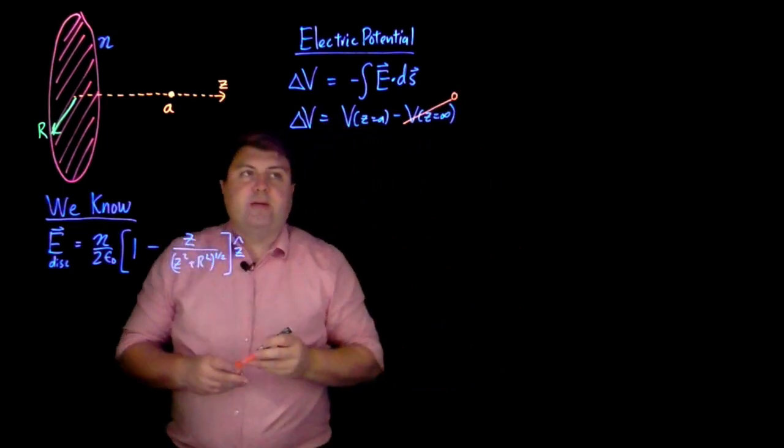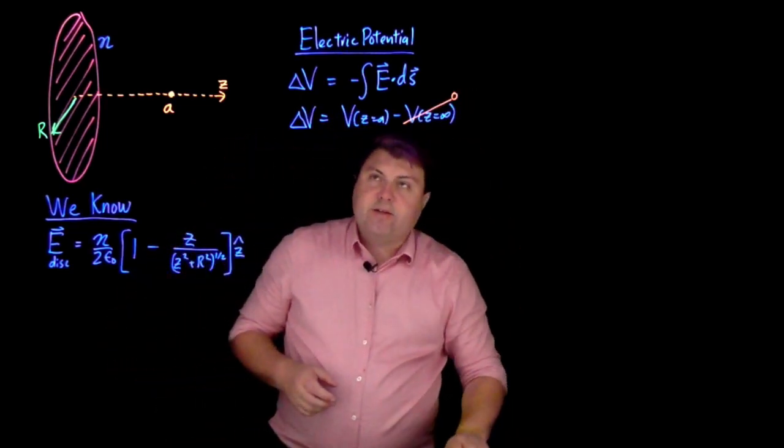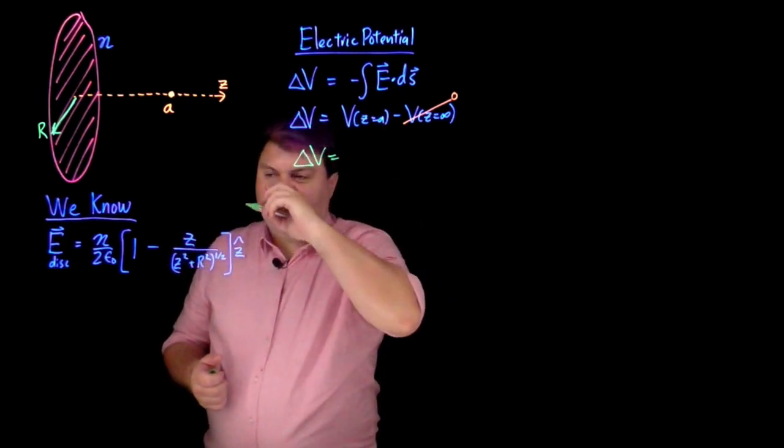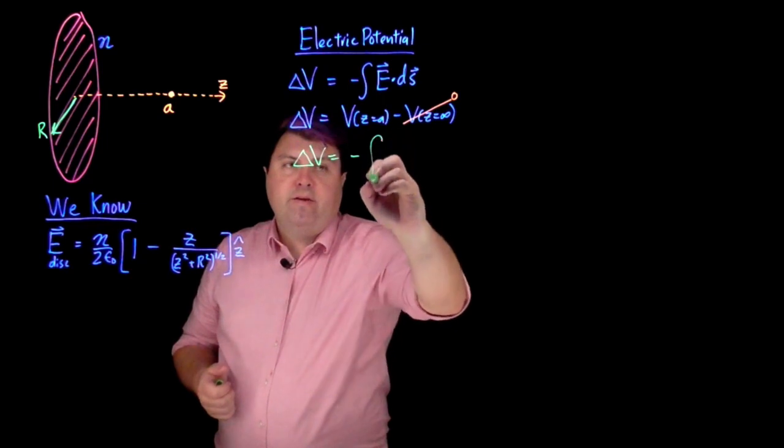So as I do my electric potential calculation, I am then going to have negative integral. So in order for it to be a path integral from infinity to a, my bounds need to be z equals infinity to z equals a.